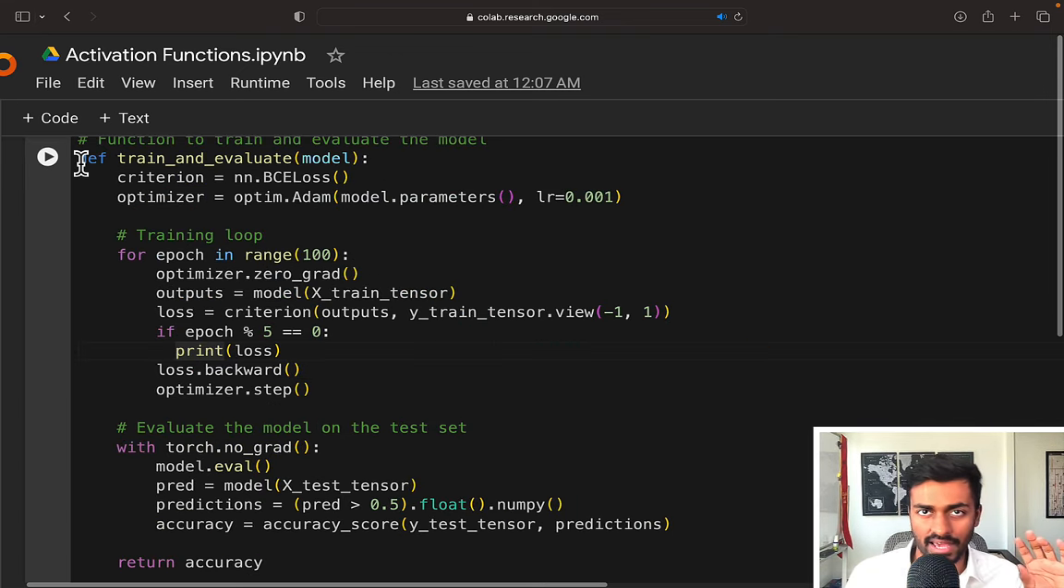Now we're going to define a function to train and evaluate the model. So first we initialize a loss, which is the binary cross entropy loss. We then make use of an optimizer. Optimizers are algorithms that actually perform the model updates. In this case, we're using the Adam optimizer. And then now we have the training loop over here.